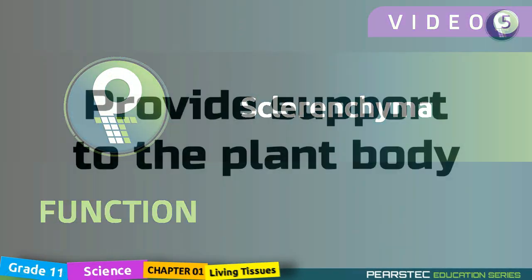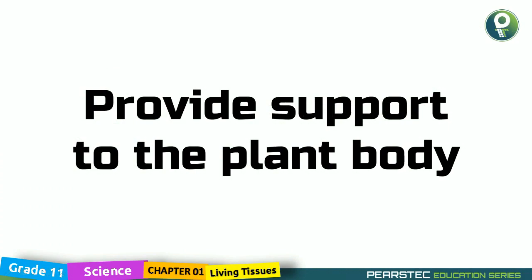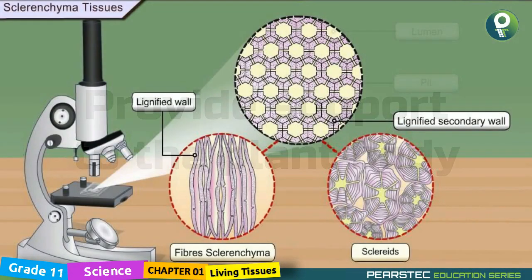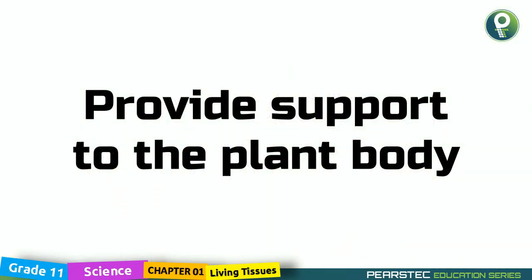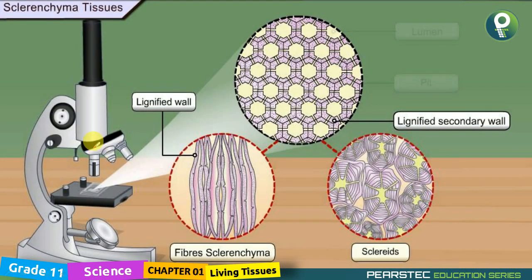The function of Sclerenchyma tissue is to provide support to the plant body. The tissue has a lignified wall and consists of two cell types: fibers and sclerids, with a lignified secondary wall. We've now understood Sclerenchyma locations for both sclerids and fibers. Goodbye and take care of yourself.